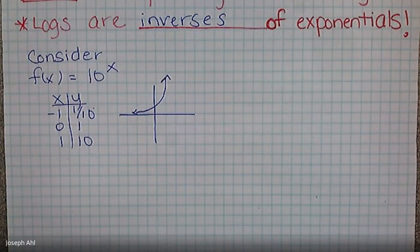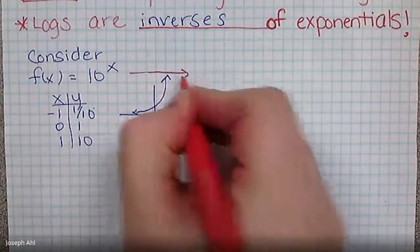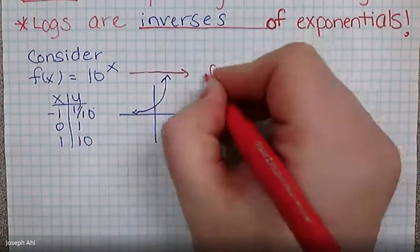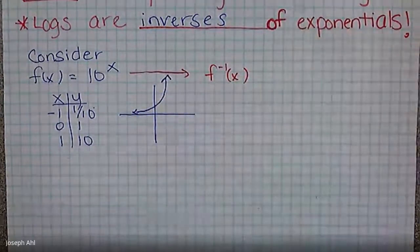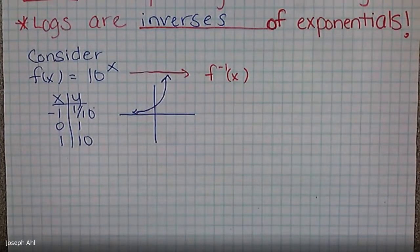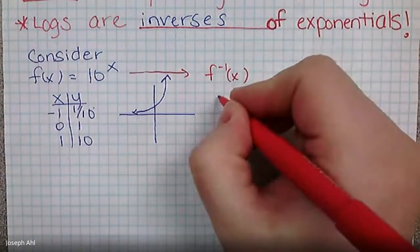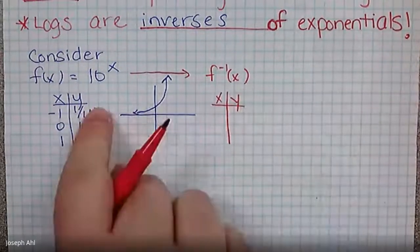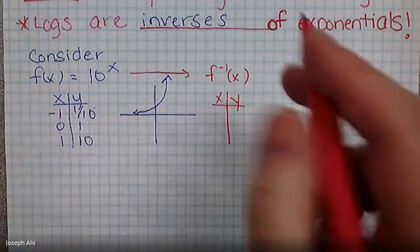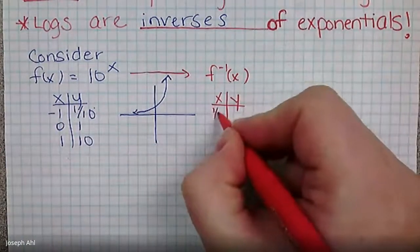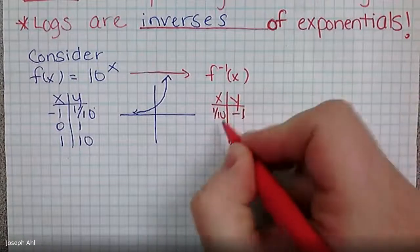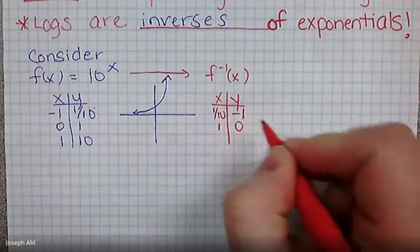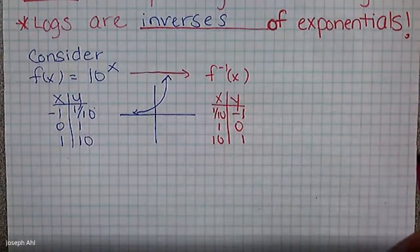Now, how do I take that information and think about what the inverse looks like? For F inverse of X, we know that when we find an inverse, the X and Y values switch. So we would get one tenth comma negative one, one comma zero, and then finally 10 comma one.